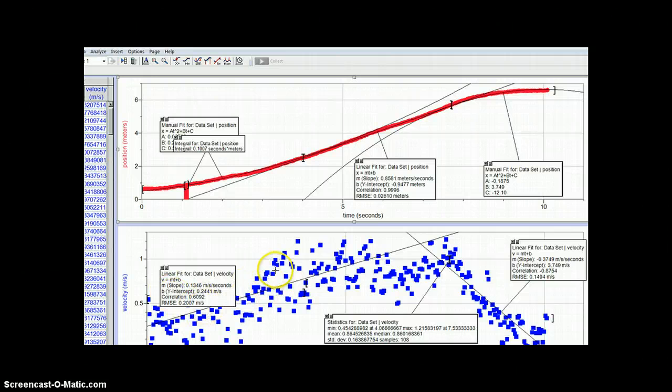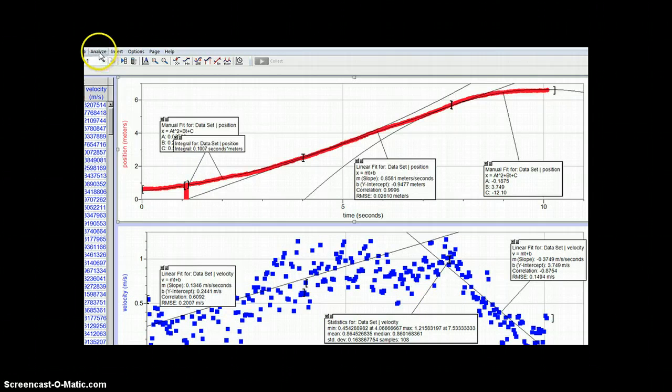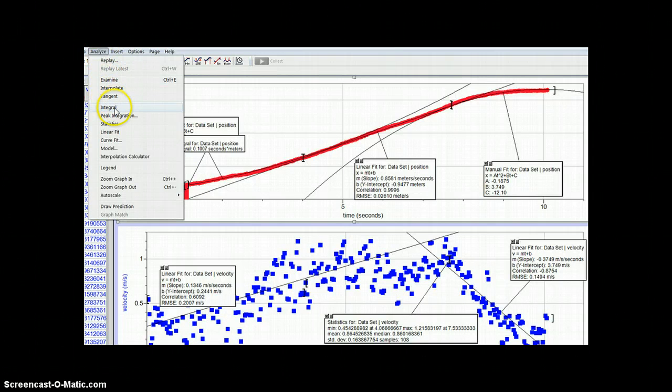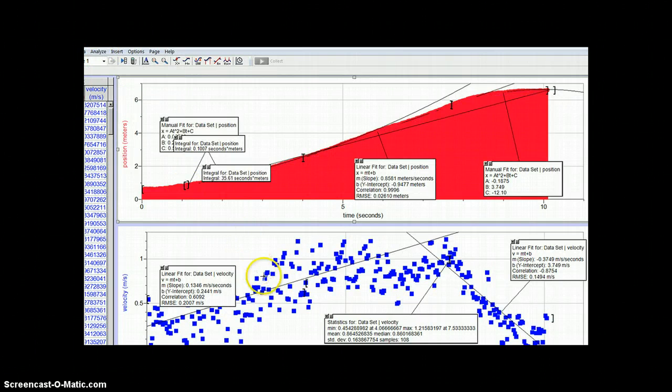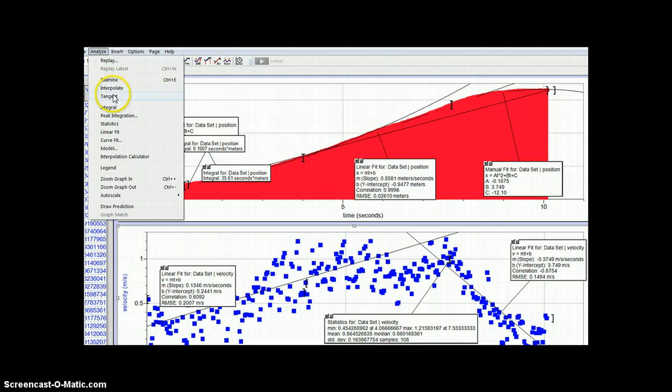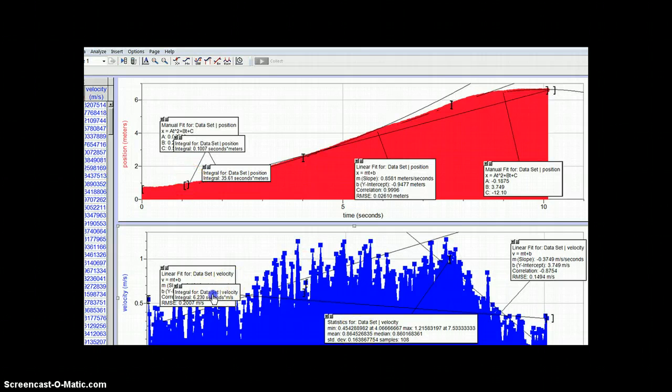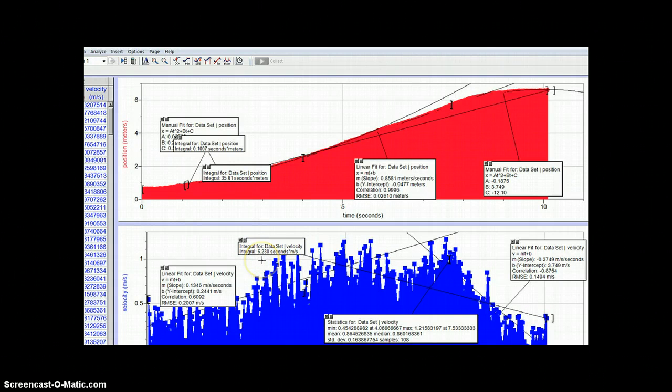So to find the displacement of the car on its path, we have to look at the velocity time graph. The displacement is the area under the graph of velocity. So I will take the integral of the velocity time graph, which comes out to be 6.23. So the displacement of the mousetrap car is about 6.23 meters.